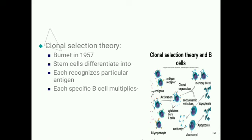The clonal selection theory was given by Burnett in 1957. According to this theory, stem cells are differentiated into many millions of T and B lymphocytes, and each T and B lymphocyte has the ability to respond to a particular antigen. Each specific B cell multiplies and establishes a population that is genetically as well as immunologically identical with the B lymphocytes from which they are produced, and this population is known as a clone.